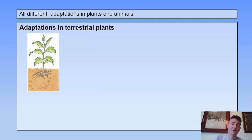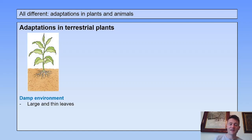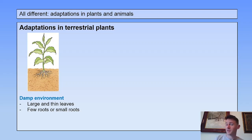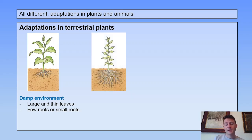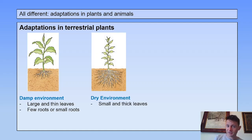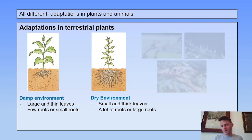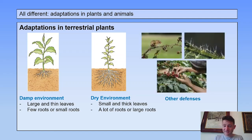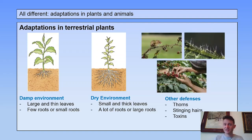Adaptations in terrestrial plants. When a plant lives in a damp environment, you often see large and thin leaves, and they have few or small roots — they don't have to spend a lot of energy when there is enough water. But in a dry environment, you see small and thick leaves to prevent evaporation, and a lot of large roots. A plant can also defend itself using thorns, stinging hairs, or toxins to prevent it from being eaten.